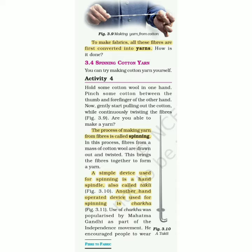A simple device used for spinning is a hand spindle, also called takli — a Hindi and Gujarati word. Another hand-operated device used for spinning is the charkha. The use of charkha was popularized by Mahatma Gandhi as part of the independence movement.